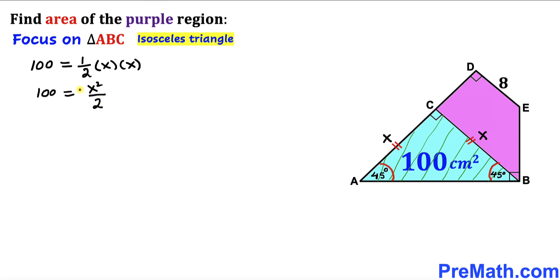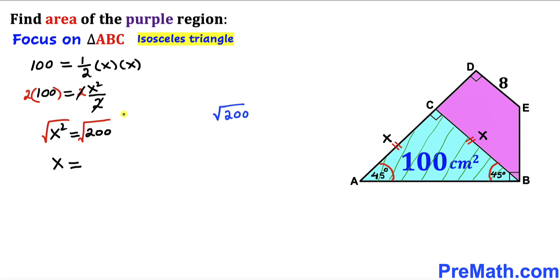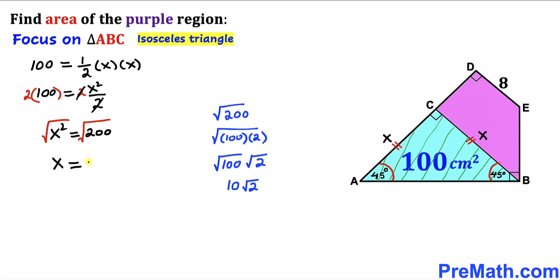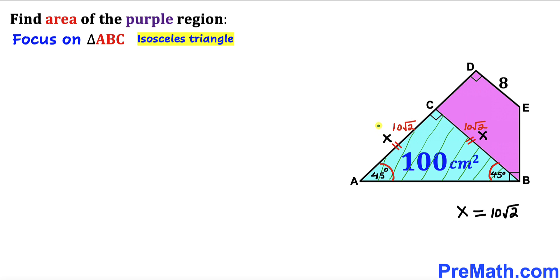Multiplying both sides by 2 to remove the fraction gives X squared equals 200. Taking the square root of both sides, X equals the square root of 200, which simplifies to 10 times the square root of 2. So both equal side lengths of triangle ABC are 10√2 centimeters.